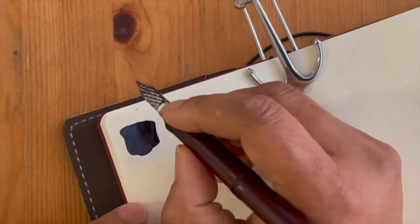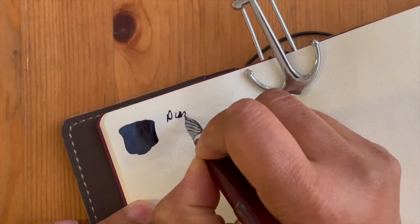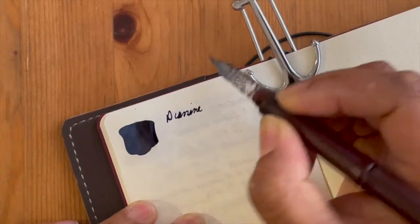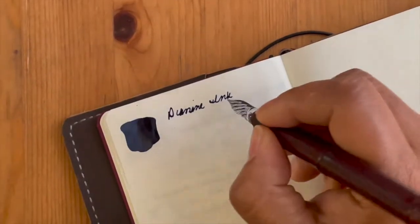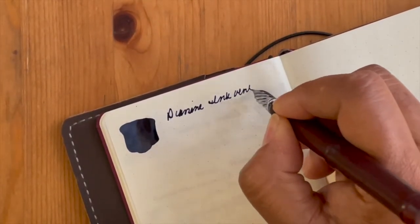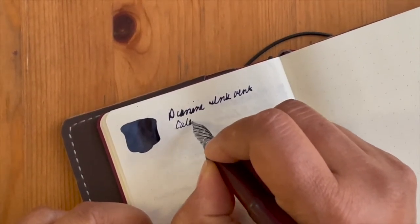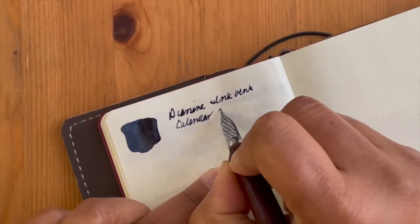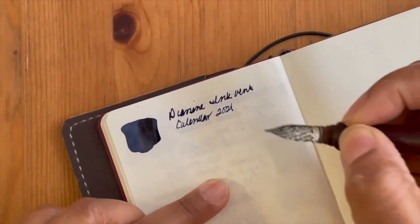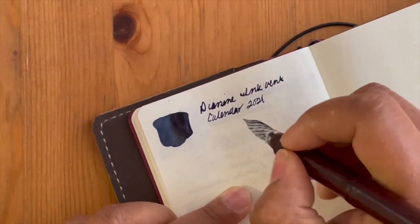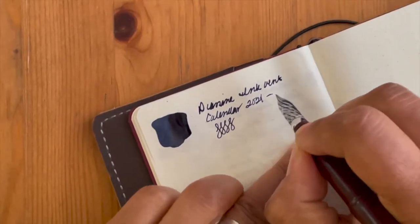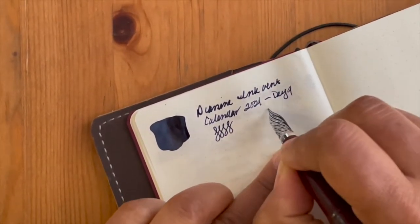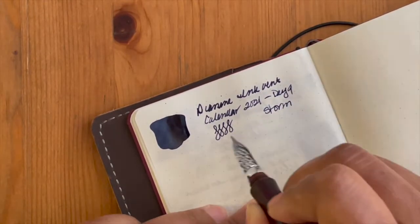Let's just do this one. No problem pulling this on the glass nib at all. This is day nine and the color is Storm. Yep.